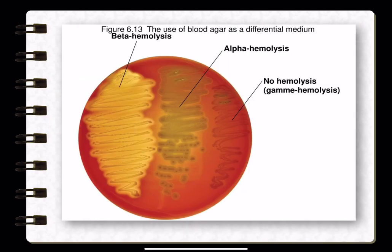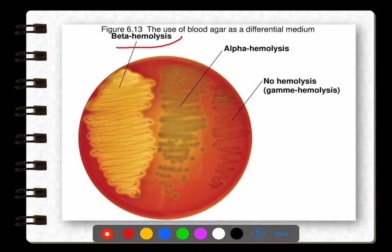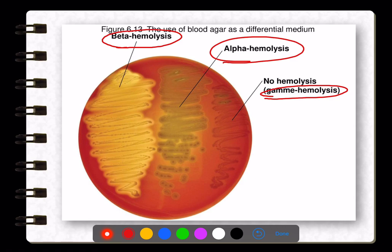There are three types of hemolytic patterns: beta hemolysis is complete lysis of red blood cells; alpha hemolysis is partial lysis, showing greenish colonies; and gamma hemolysis means no lysis of red blood cells at all. Beta hemolysis is complete, alpha is partial, gamma is no hemolysis.